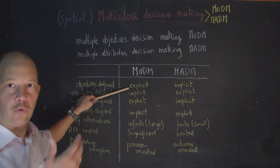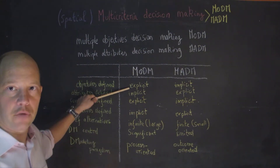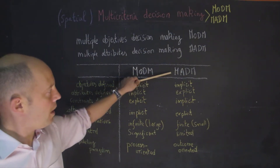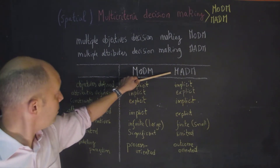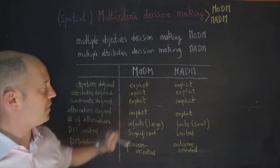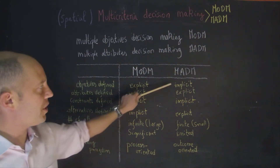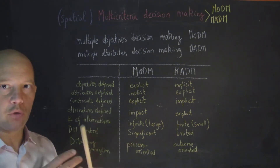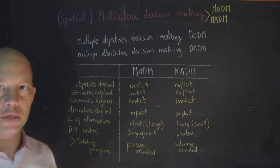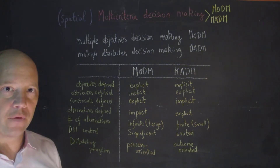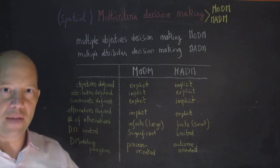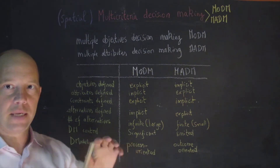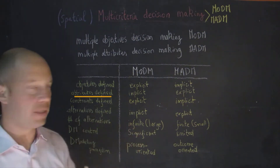For instance, we want to minimize the cost, we want to maximize biodiversity. While for multiple attribute decision-making, those are implicit — we don't directly say we want to minimize the cost, for instance. But the rent of an apartment is implicitly stated in our decision.